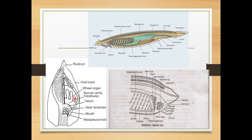The inner side of the oral hood is projected into ridges and grooves called the wheel organ — 'wheel' meaning chakra. The wheel organ is also known as the organ of Müller. The movement of its cilia creates a whirling water current during feeding.